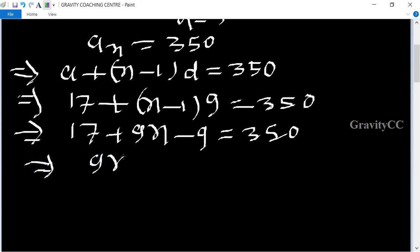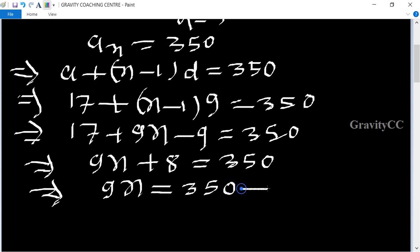This implies that 9n plus 8 equal to 350, which implies that 9n equal to 350 minus 8 equal to 342.